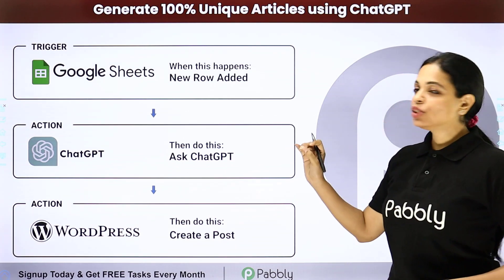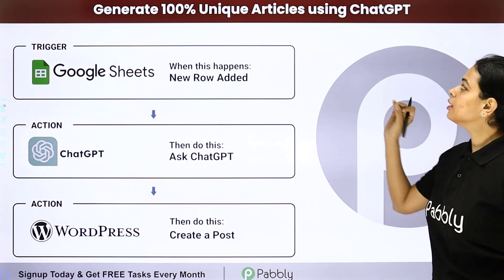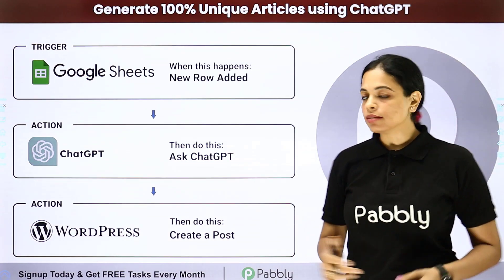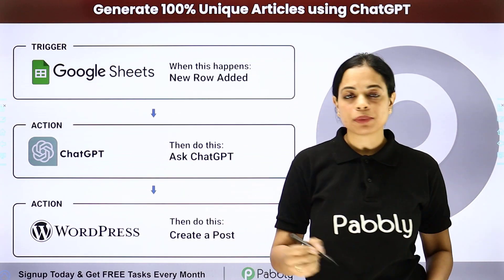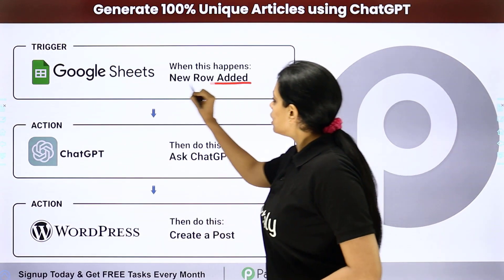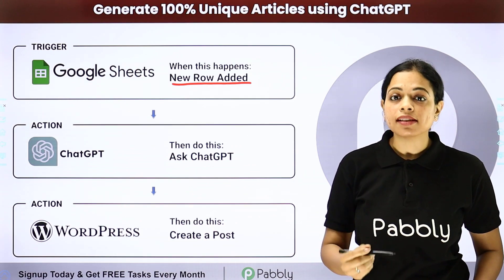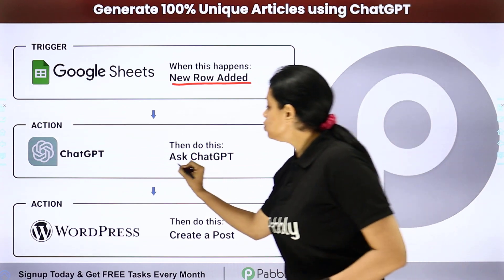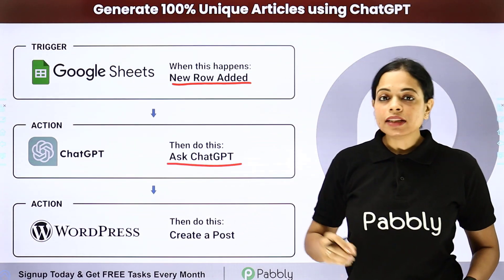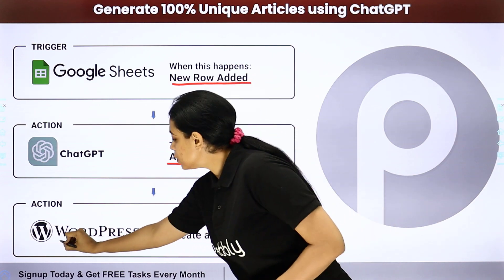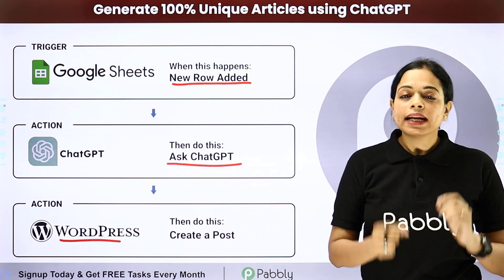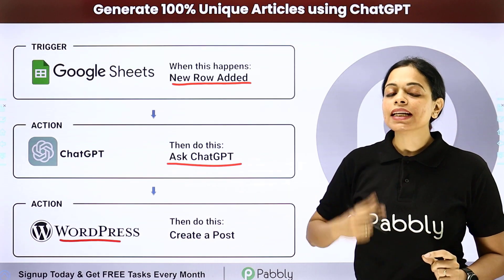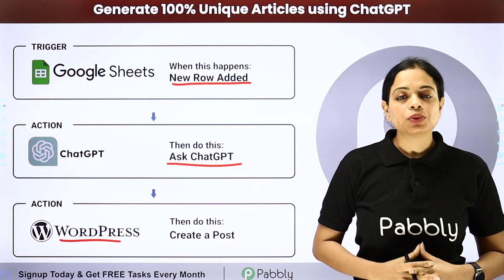In this video, we are going to see how to generate 100% unique articles using ChatGPT. Let's say that you have got certain titles for your articles in your spreadsheet. Here, we have taken the example of a Google Sheet. Every time a new row is added as a new title, with the help of ChatGPT — a chatbot of OpenAI — you want to generate the article and then create a post in WordPress with the generated content. And then the link of that particular post should be updated as a cell value in your Google Sheet.